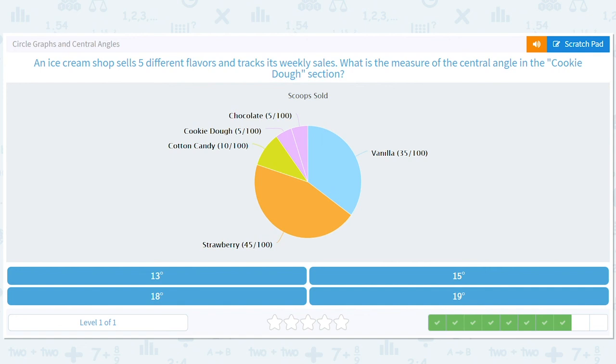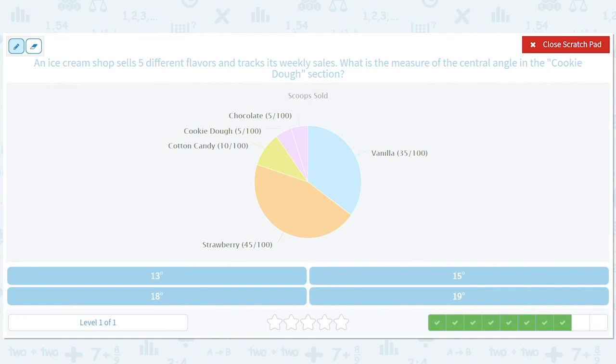Okay. Ooh, this is a good one. Cookie dough section. That is that. Five out of 100 times 360. Hey, remember that trick, which was 10 out of 100 is 36, so 5 out of 100 is 18. So it's 18 degrees.